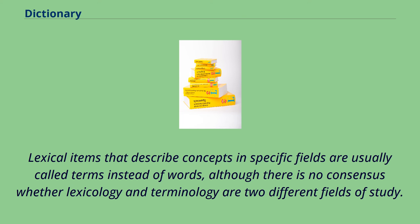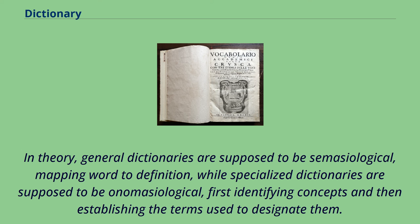In theory, general dictionaries are supposed to be semasiological, mapping word to definition, while specialized dictionaries are supposed to be onomasiological, first identifying concepts and then establishing the terms used to designate them. In practice, the two approaches are used for both types.